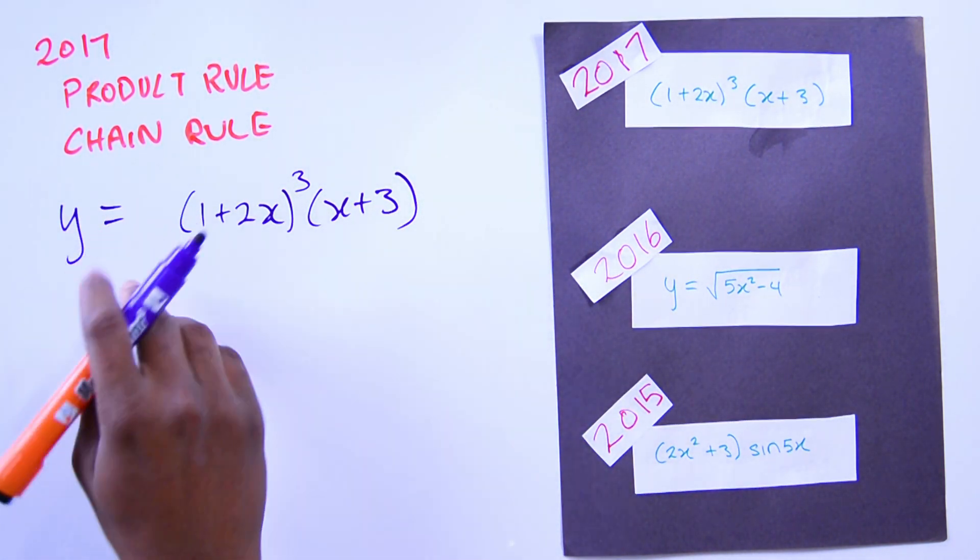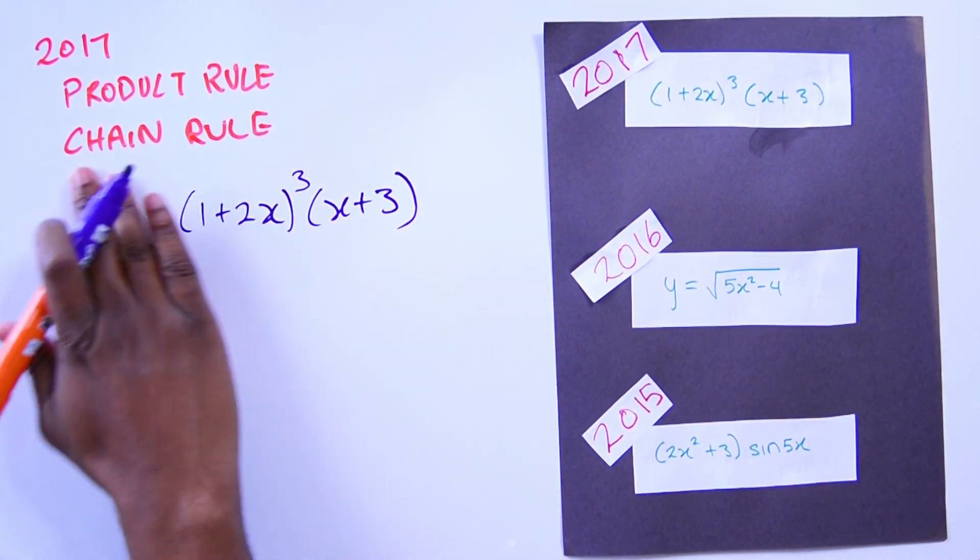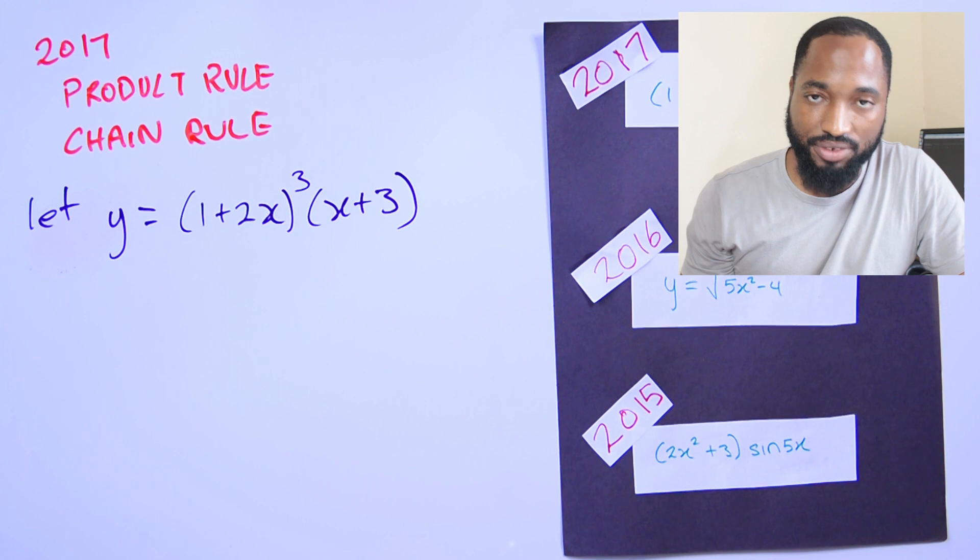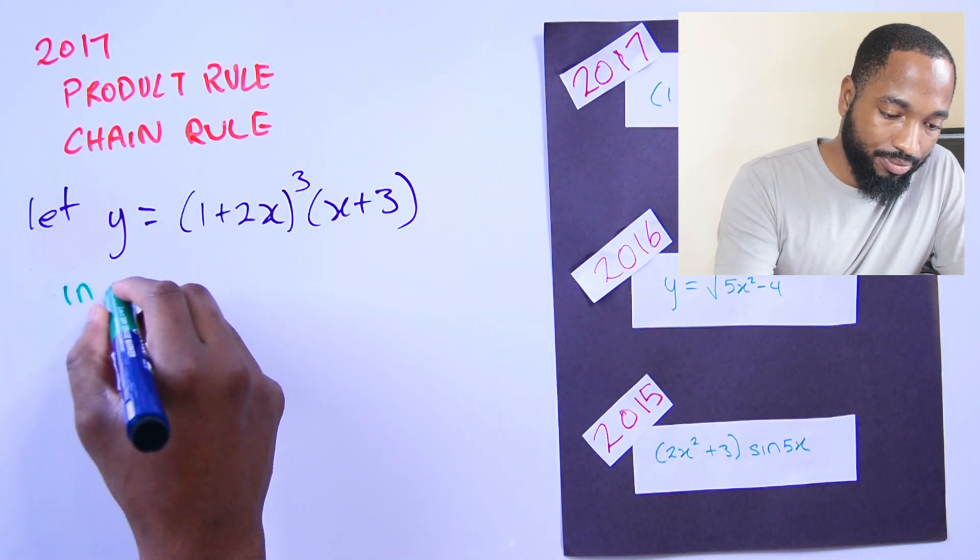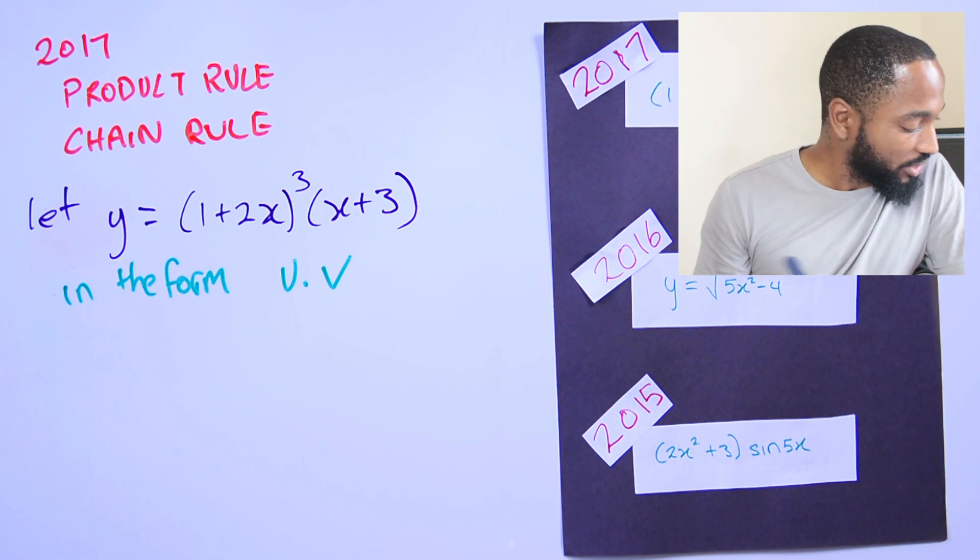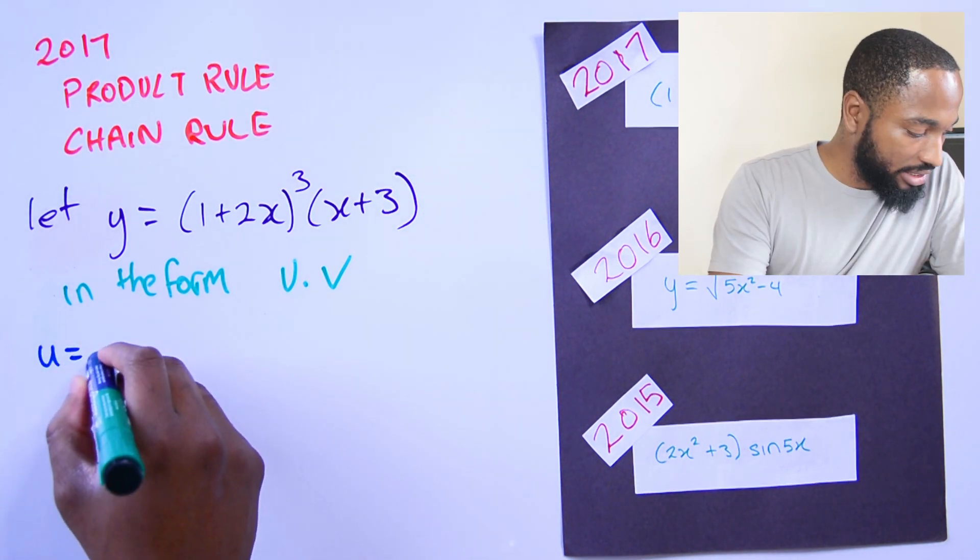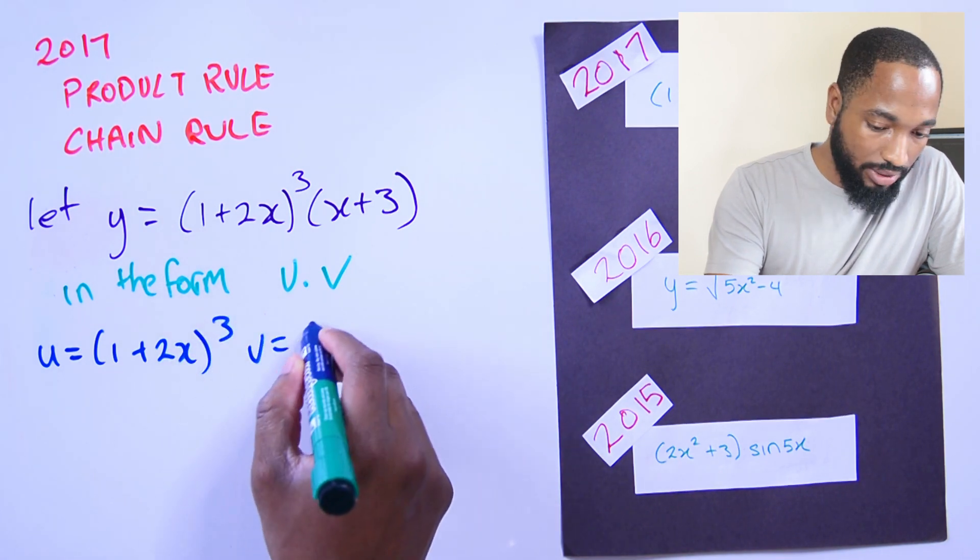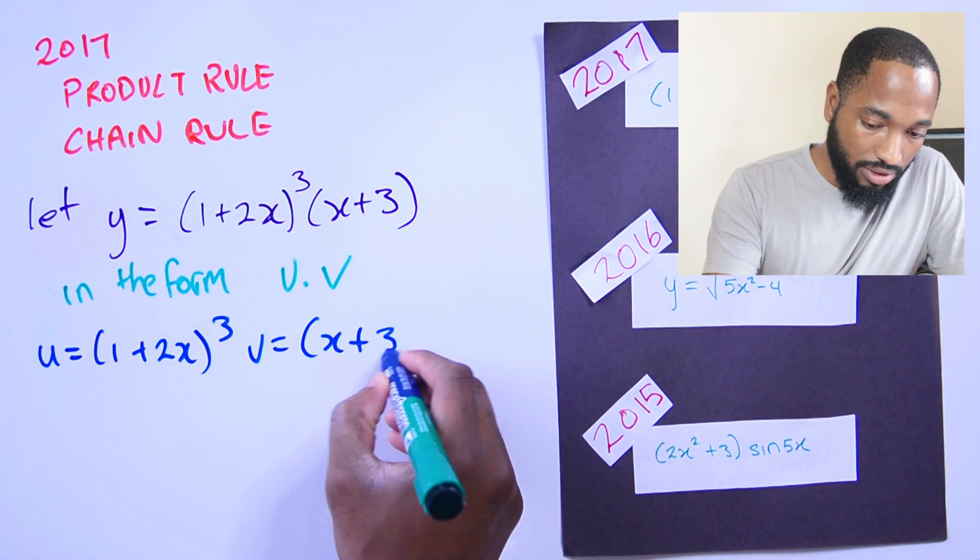So we'll say let y be equal to that, and then we begin our journey. This is in the form u·v where two functions are being multiplied by each other, where u is equal to (1 + 2x)³ and v is equal to (x + 3).